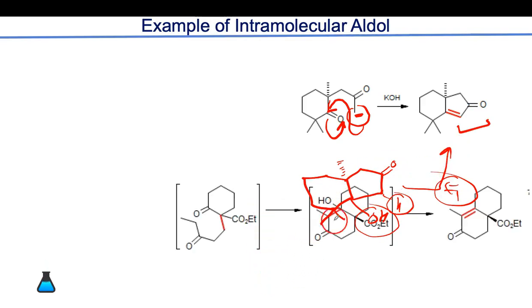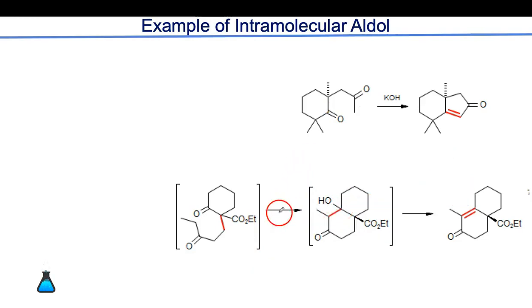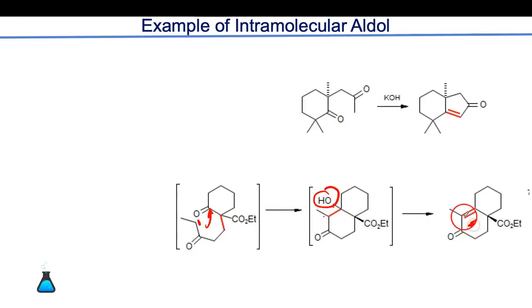In another example of intramolecular aldol condensation involving an ester group and ketone: the alpha hydrogen is removed, attack occurs at the carbonyl position forming an OH group, and then water is eliminated forming a double bond.